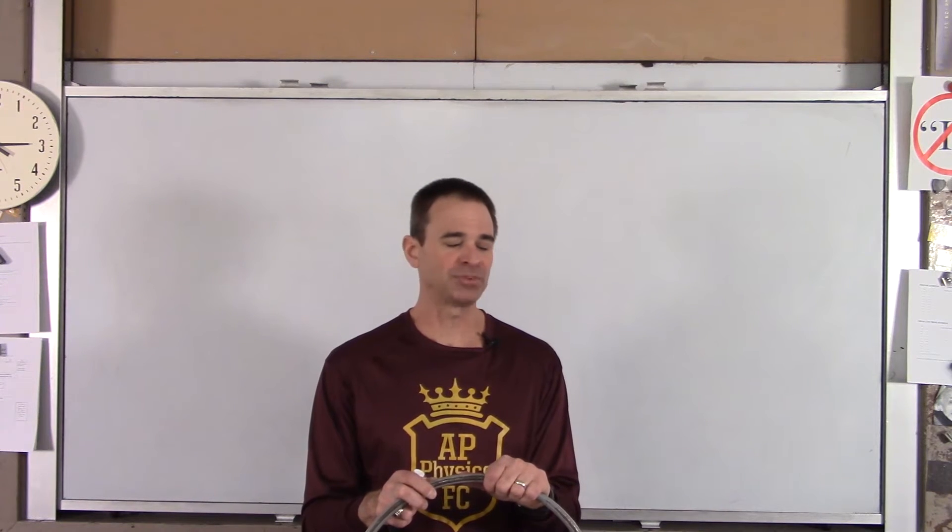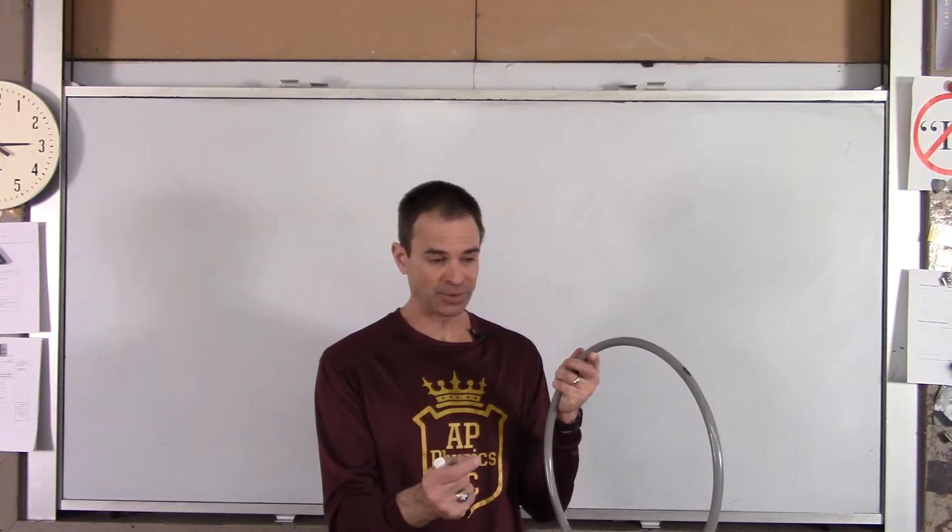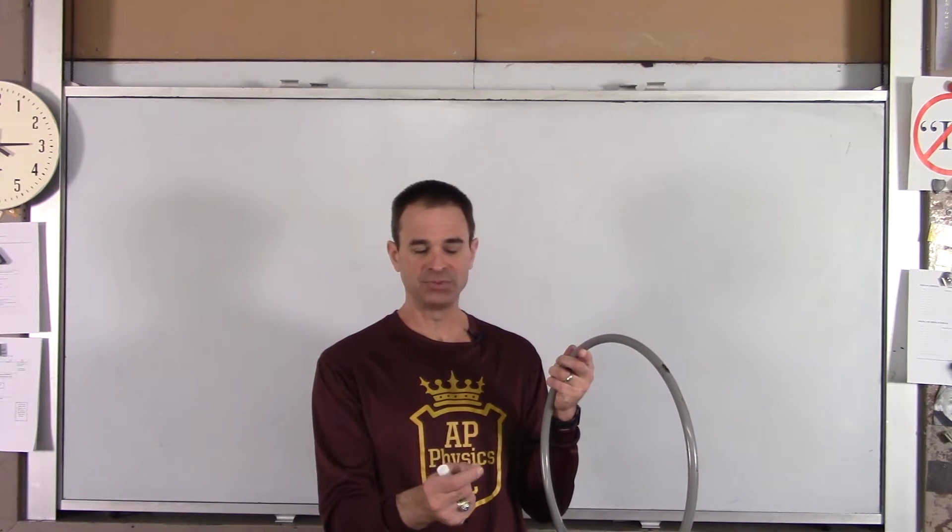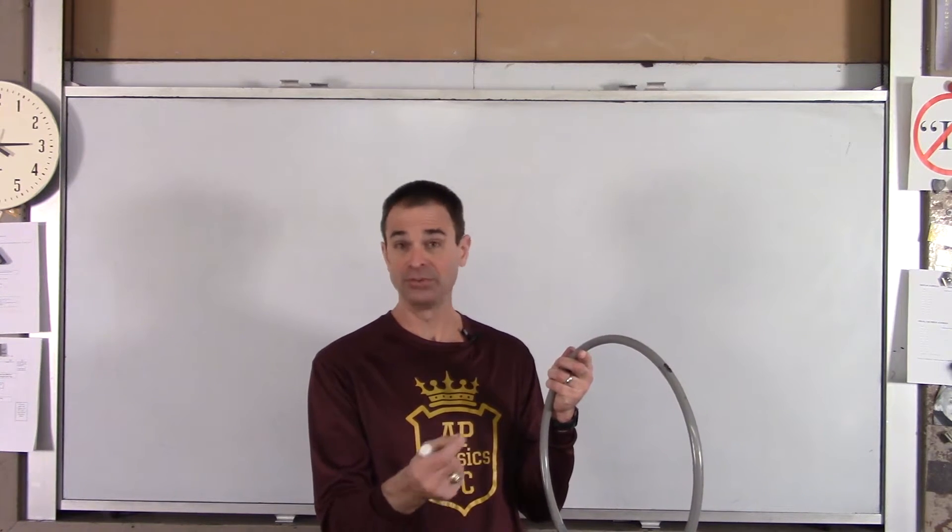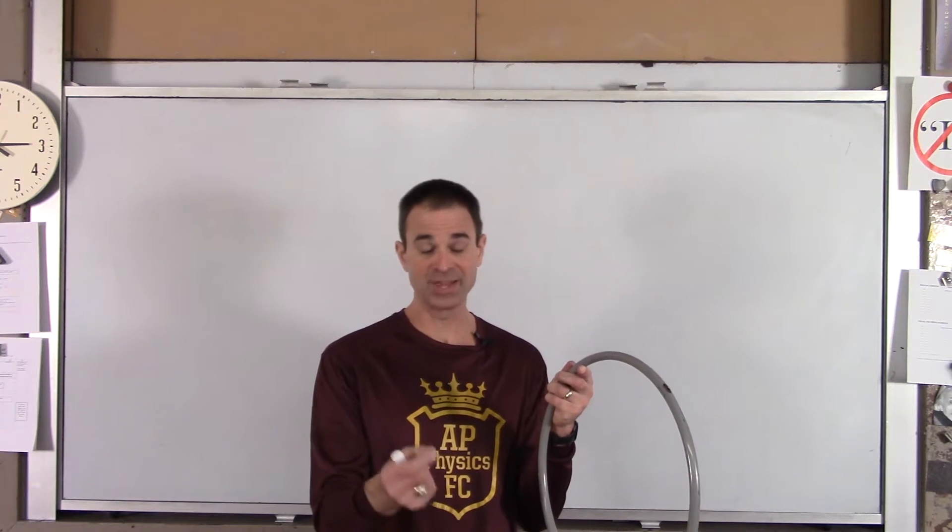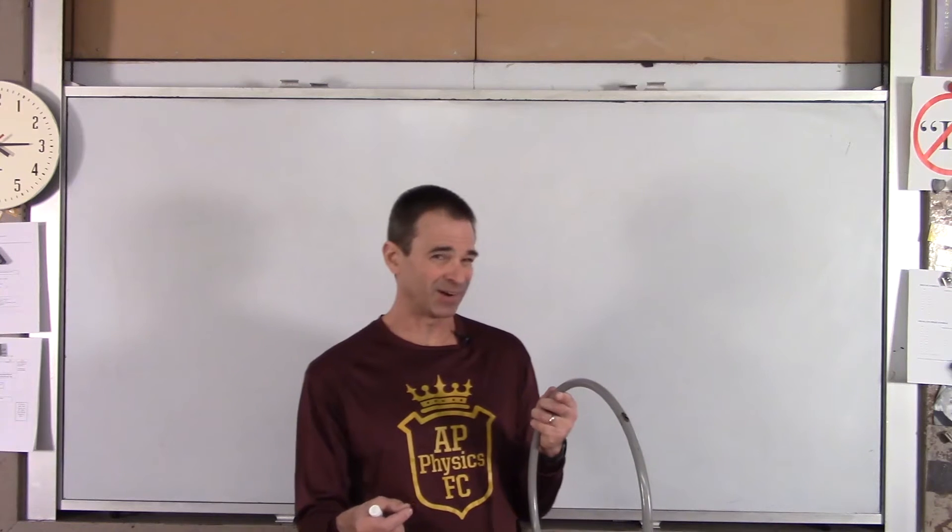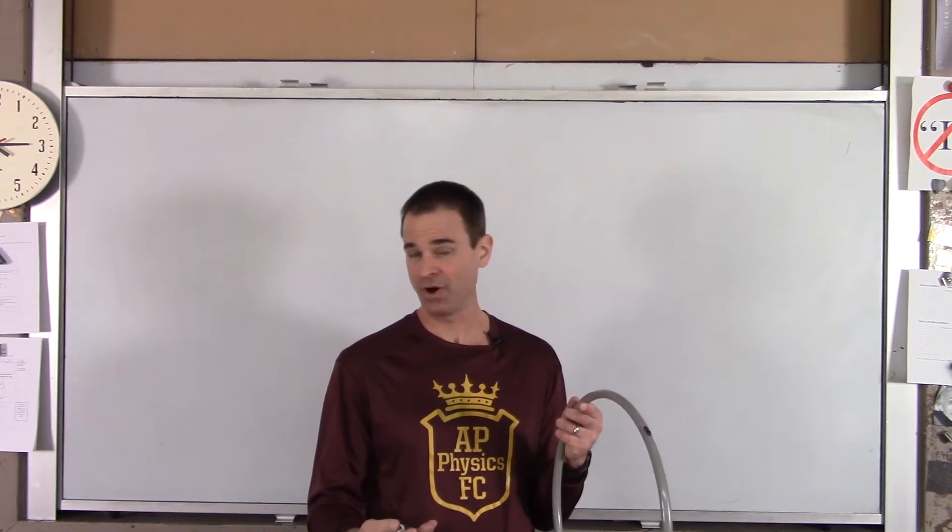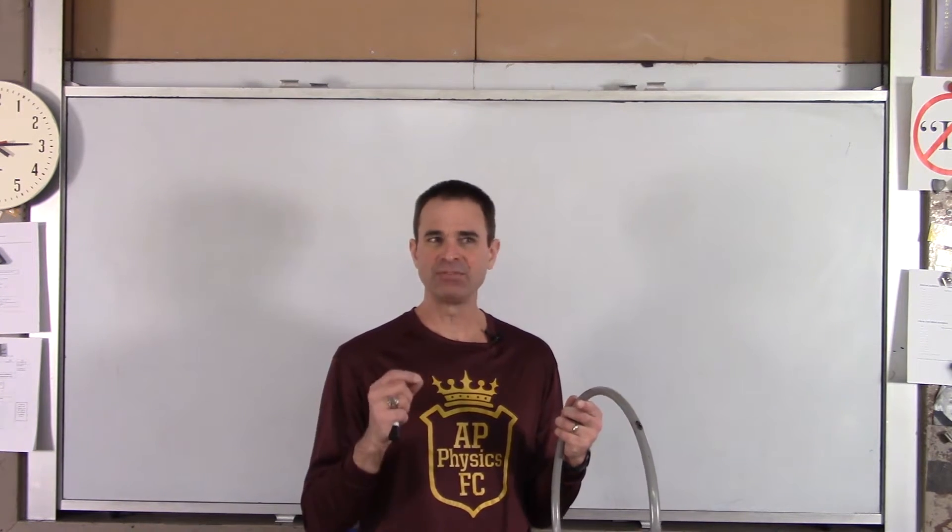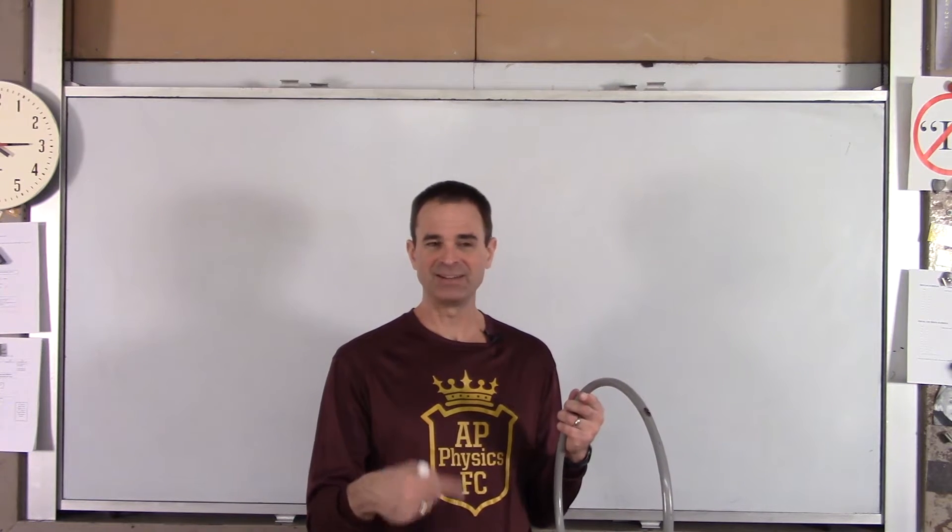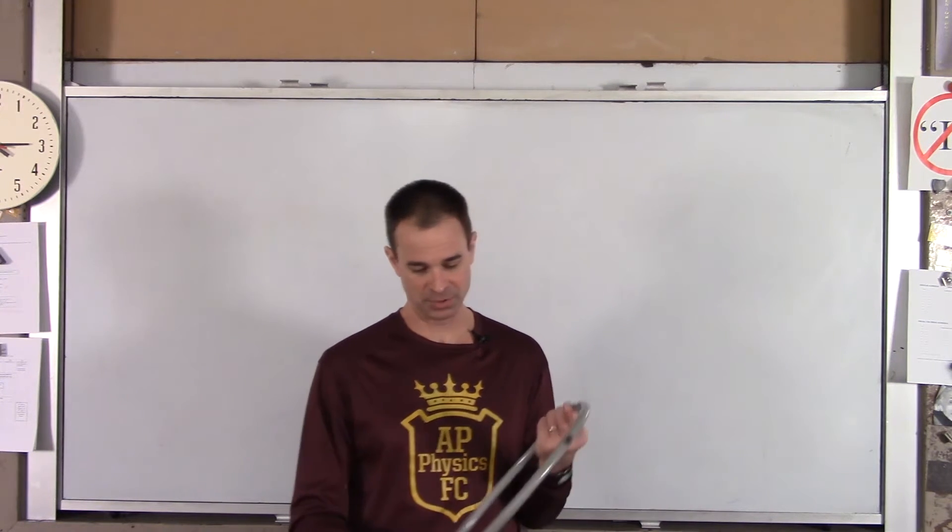Recall from a couple chapters ago, we found the electric field created by this ring by using the K integral DQ over R squared in the R hat direction. Now, it turns out for a ring that's not that hard, but it still takes a couple lines of work and a little bit of thought. If you have the voltage of the ring, finding the electric field is somewhat easier.